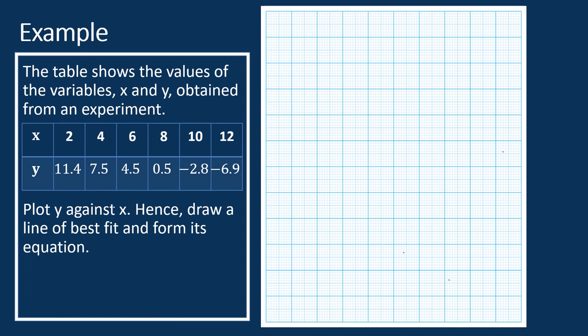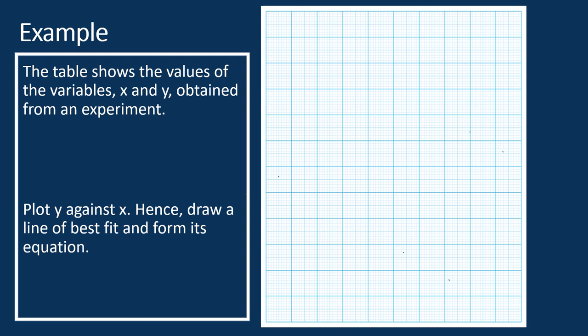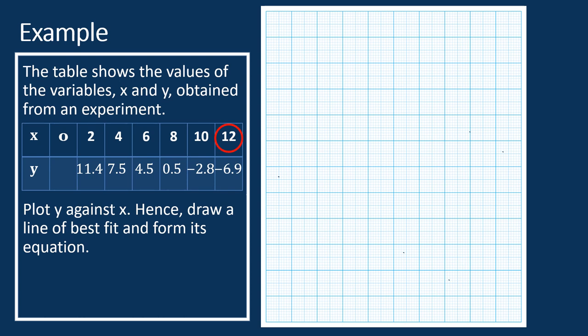In order to plot a graph, the first thing is to determine the scale of the horizontal and vertical axes. To determine the scale, we need to find the maximum and minimum values of the points on the graph. You may think the minimum value of the x-coordinate is 2 and the maximum is 12. However, this is not true. In order to find the equation of the line, we need the y-intercept, where x equals 0. Therefore, if we include the y-intercept, the minimum value of the x-coordinate is 0, not 2.